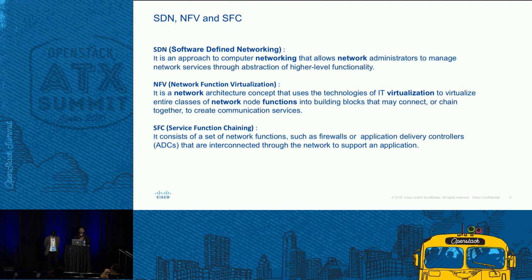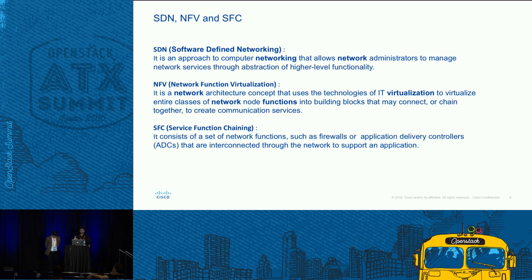SDN allows you to control your network devices irrespective of what kind of device it is — you could have a Cisco device or a Juniper device. The CLIs might be different, but SDN allows you to centrally control them. NFV means those physical devices are converted into virtual machines — hardware converted into software with the same capability — and you can move them around and provision wherever you want. Service function chaining is the sequence of NFVs you put together to achieve a certain assurance: firewall, packet filtering, WAN acceleration. Depending on the requirement, you put traffic through a sequence of functions.